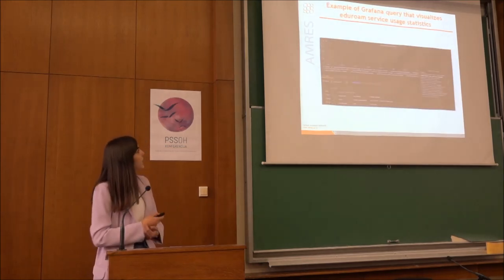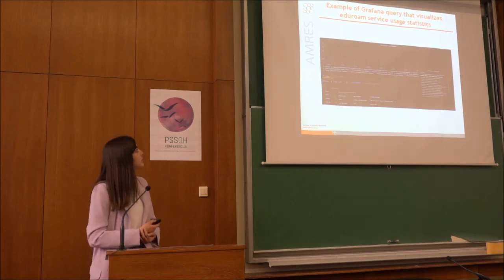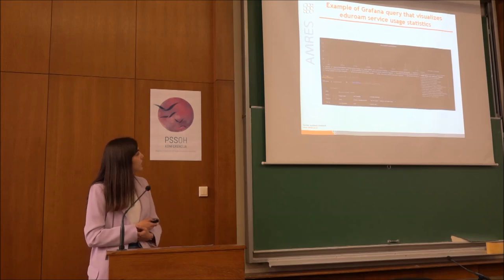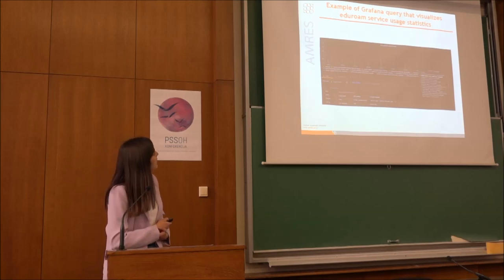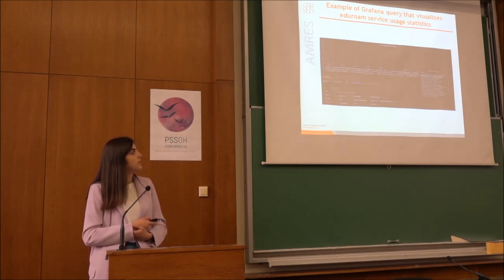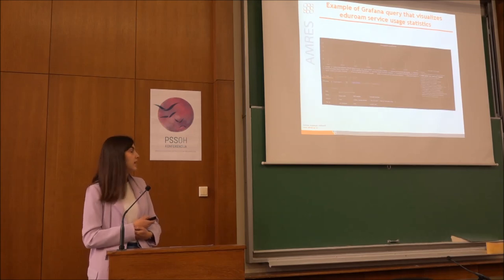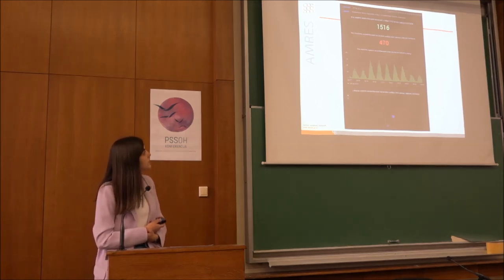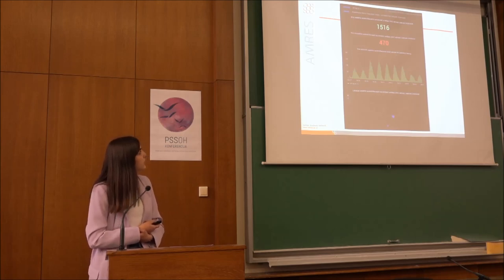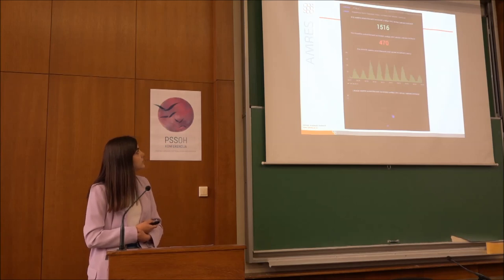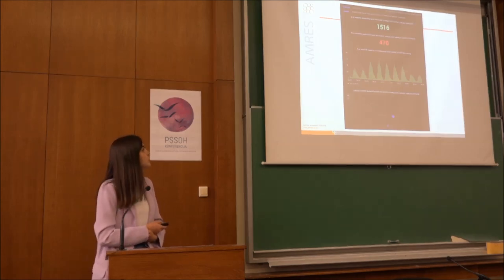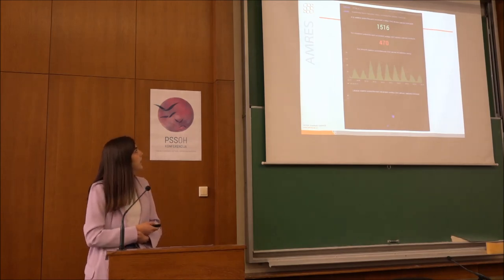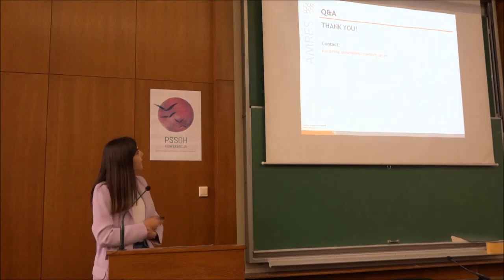And here is the example of Grafana query that visualize eduroam service usage statistics. We are here writing variant in JSON format because Elasticsearch works with JSON and you can always this query save it as panels and you can create a dashboard. I think yes, I here want to present you one simple dashboard which consists a few panels where you can see here the number of successful authentication and I think number of unsuccessful authentications, the map, and we implemented here some basic filters so that we can filter data by location and institution. And I think that's it. So thank you.